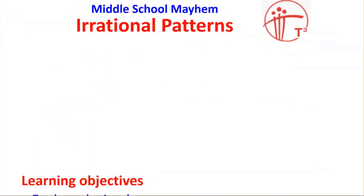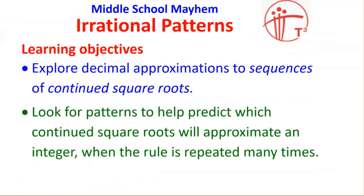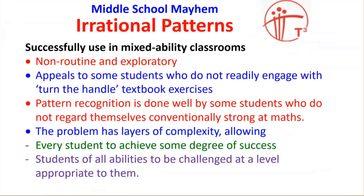So what is this activity about? The learning objectives are exploring decimal approximations to sequences of continued square roots and looking for patterns to help predict which continued square roots will approximate an integer when the rule is repeated many times. The reason this activity has been used successfully with mixed ability classes over the years is that it's non-routine and exploratory — it appeals to students who don't necessarily engage with textbook exercises and involves pattern recognition often done well by students who don't regard themselves as conventionally strong at maths.